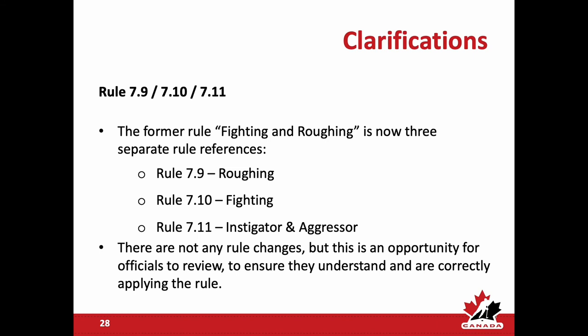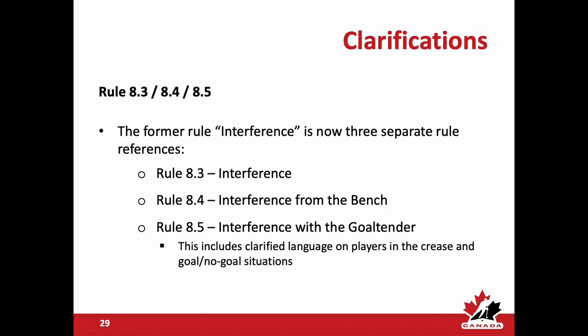Rules 8.3, 8.4, and 8.5 take the former interference and protection of the goaltender rule and split it into three separate references: rule 8.3 interference covers the general criteria for an interference penalty; rule 8.4 interference from the bench, with criteria of a bench minor if no player is identified, a minor and game misconduct if the interfering player from the bench is identified, and a minor and gross misconduct if a team official is identified; and rule 8.5 interference with the goaltender, which outlines penalty infractions and includes language on players in the crease regarding a goal or no goal situation.